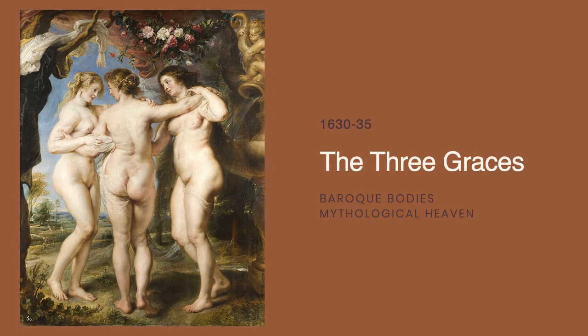In contrast to the dramatic mythological scene previously discussed, The Three Graces is more about classical beauty. Rubens painted this piece between 1630 and 1635. The Three Graces were minor goddesses as daughters of Zeus. They represented beauty, charm, and human creativity. Sometimes the Three Graces are shown as companions to the goddess of love, Aphrodite. This painting is entirely focused on beauty and sensuality. Rubens painted each figure with fleshy bodies and in the nude. The Grace on the left is actually based on his second wife, Helene.